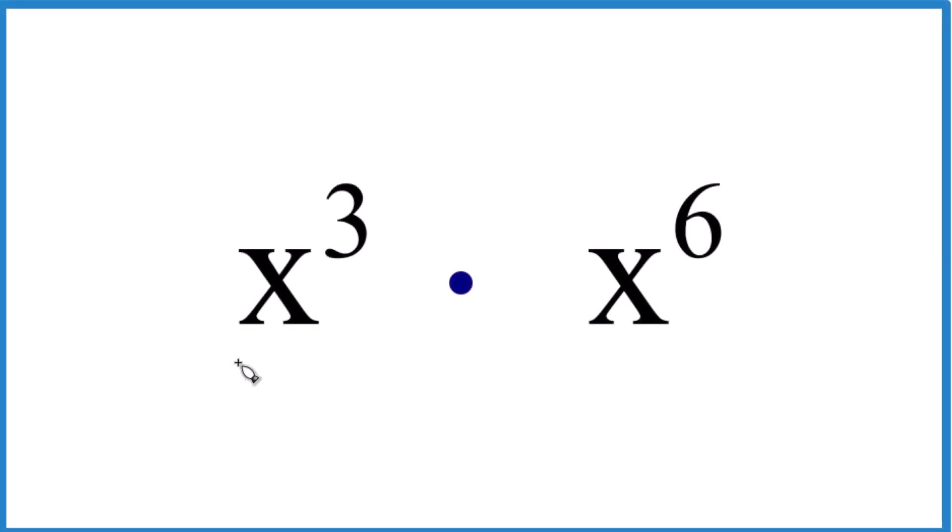Someone asked me, how do you multiply x to the third times x to the sixth? So x cubed times x to the sixth. And there are two ways you can think of this.